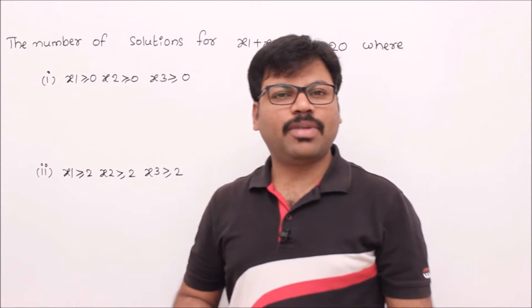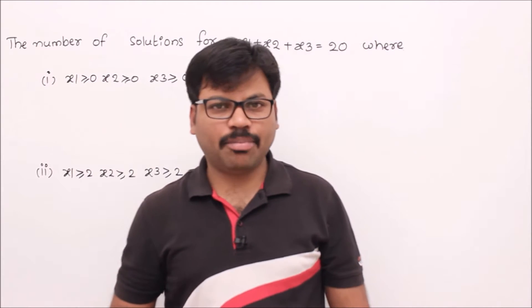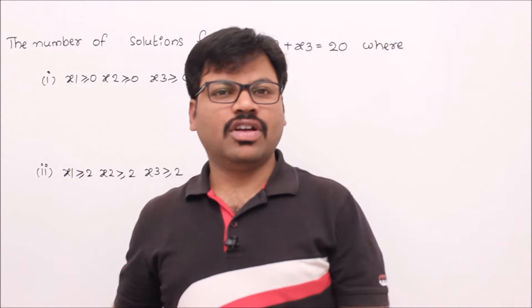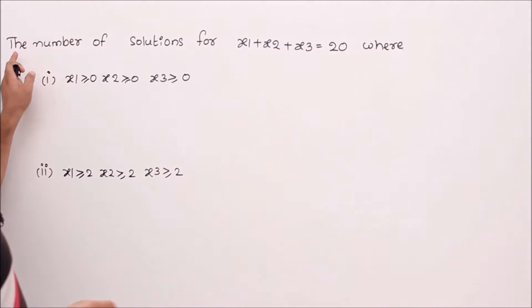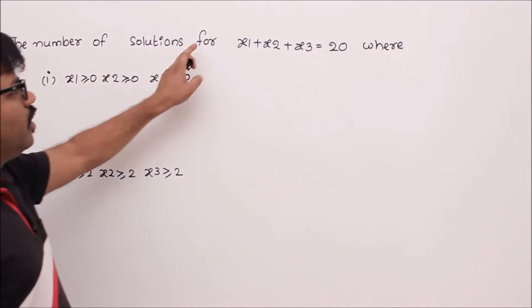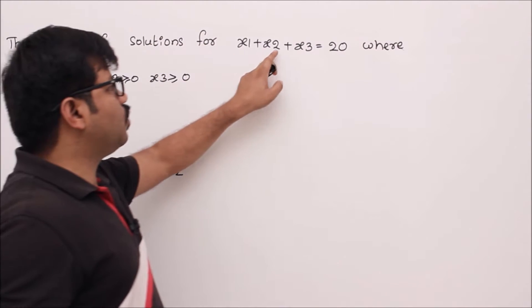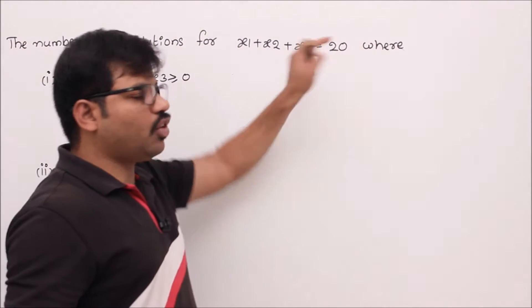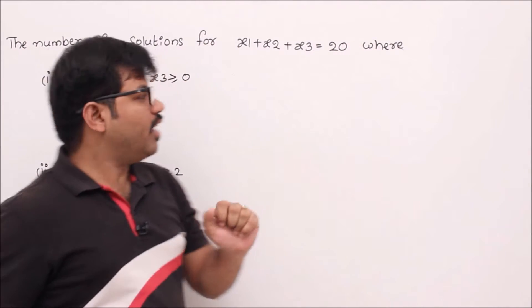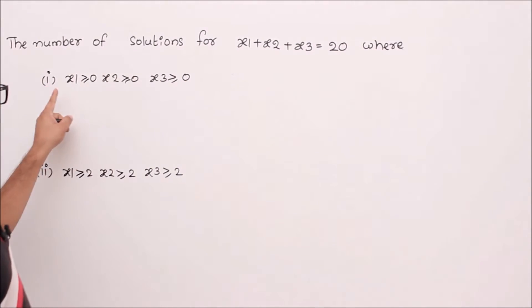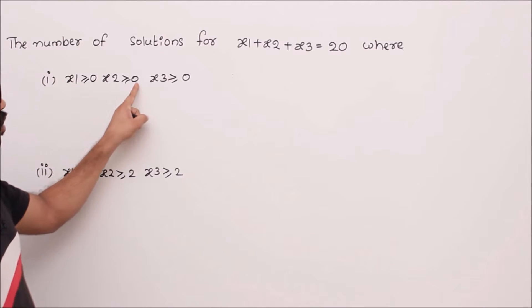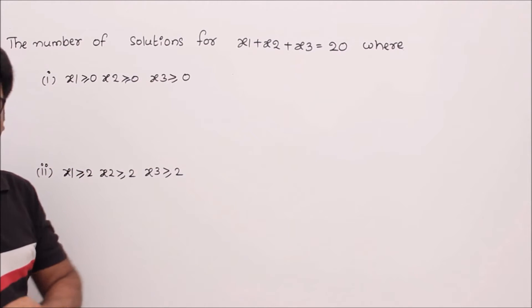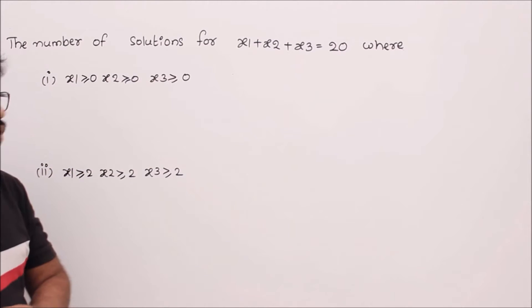Let's see problems related to template number 4 and template number 5. Problem number 1 is: find the number of solutions for x1 plus x2 plus x3 equal to 20, where x1 greater than or equal to 0, x2 greater than or equal to 0, x3 greater than or equal to 0.